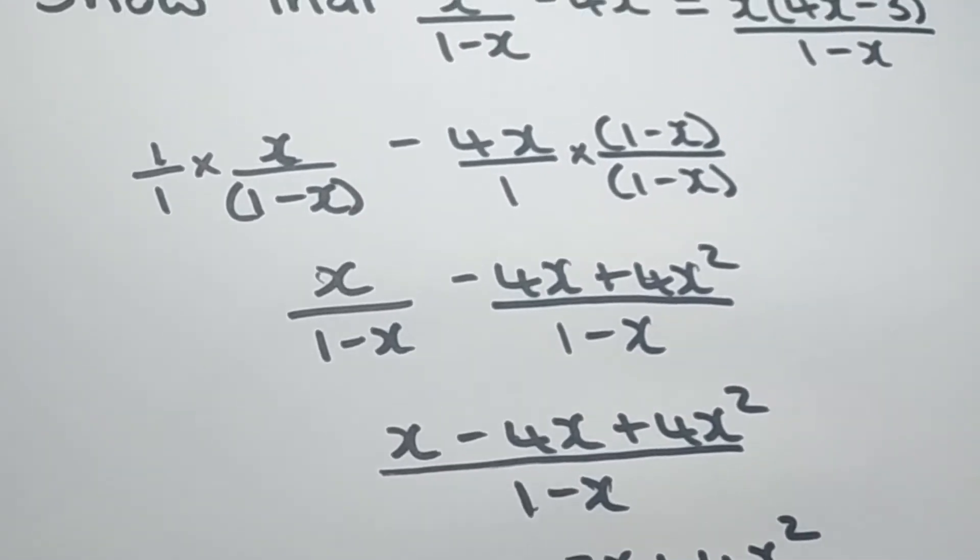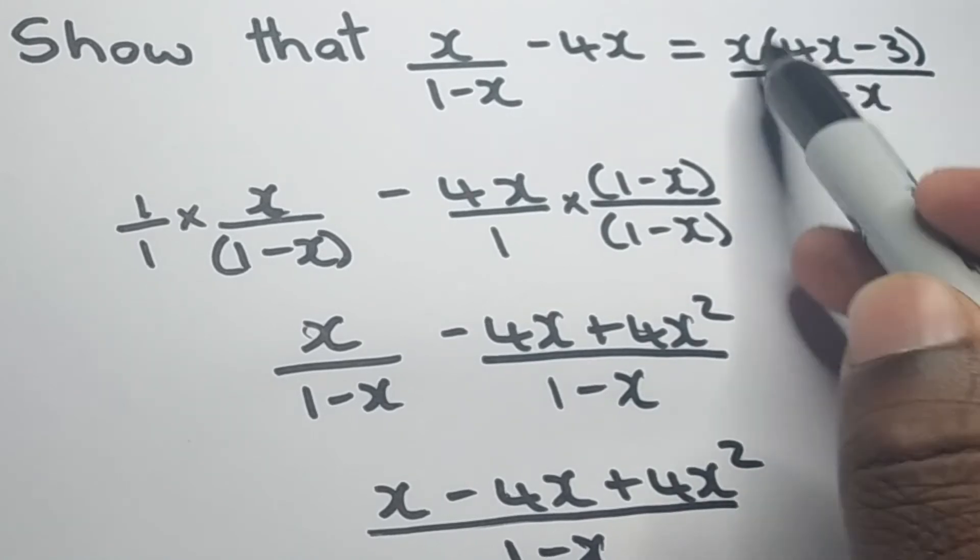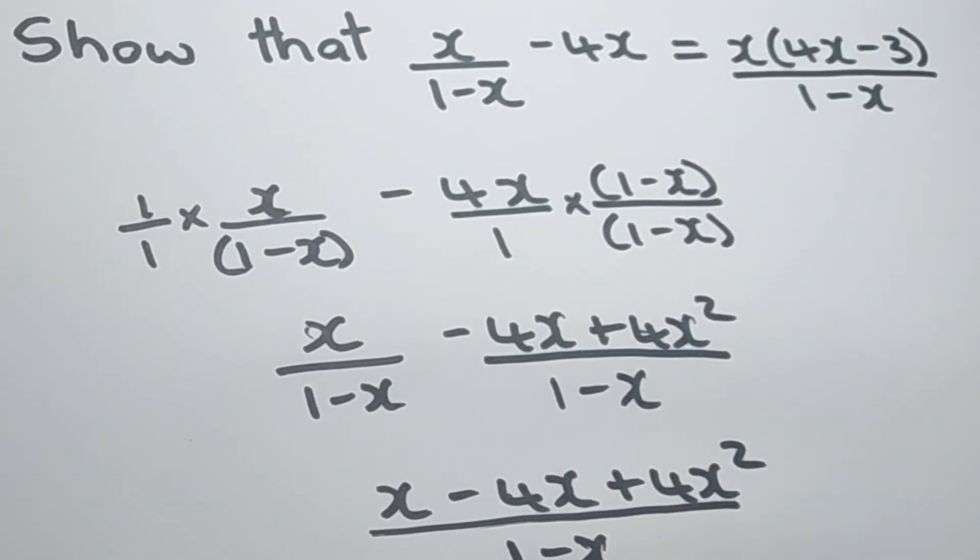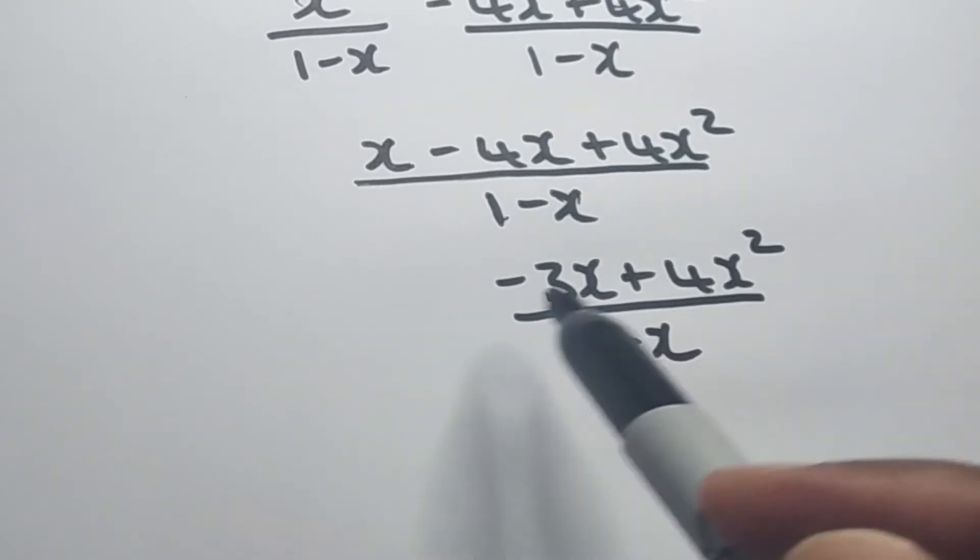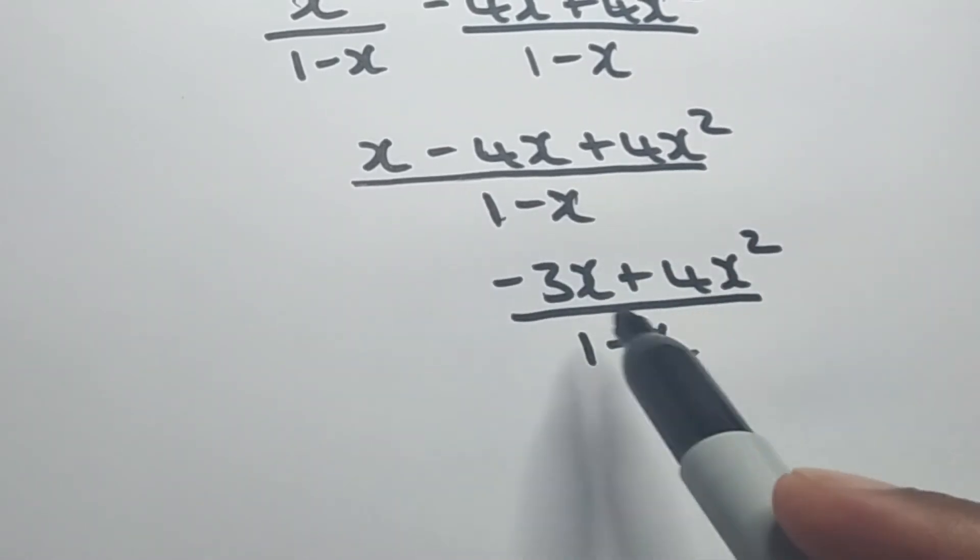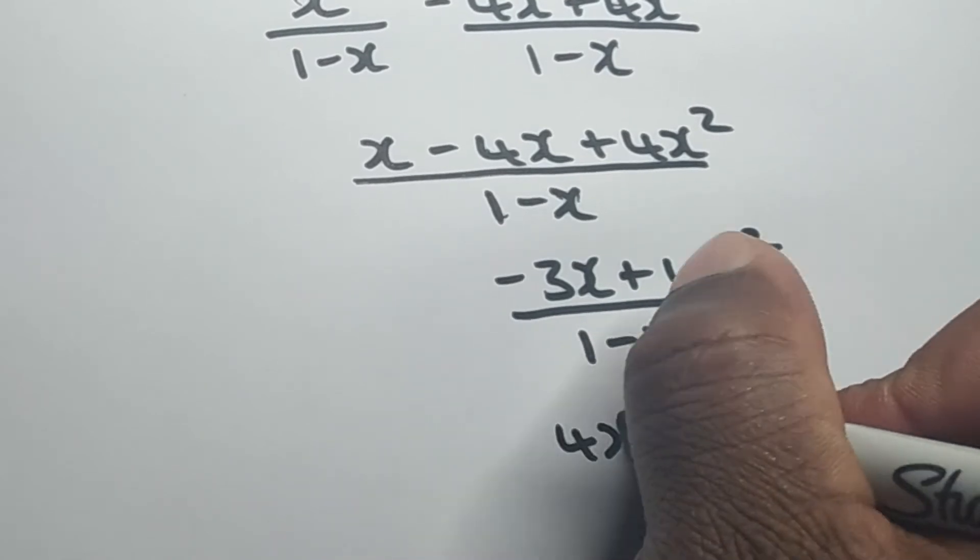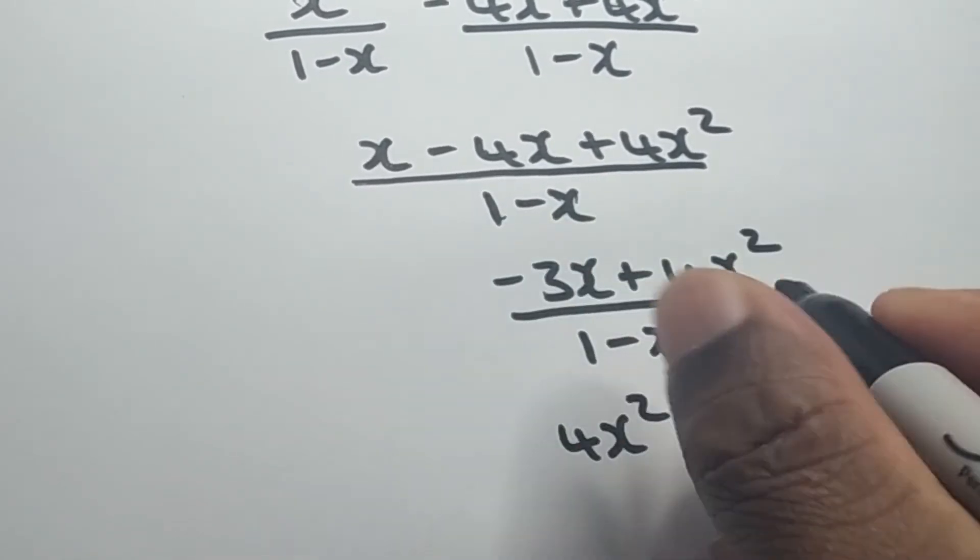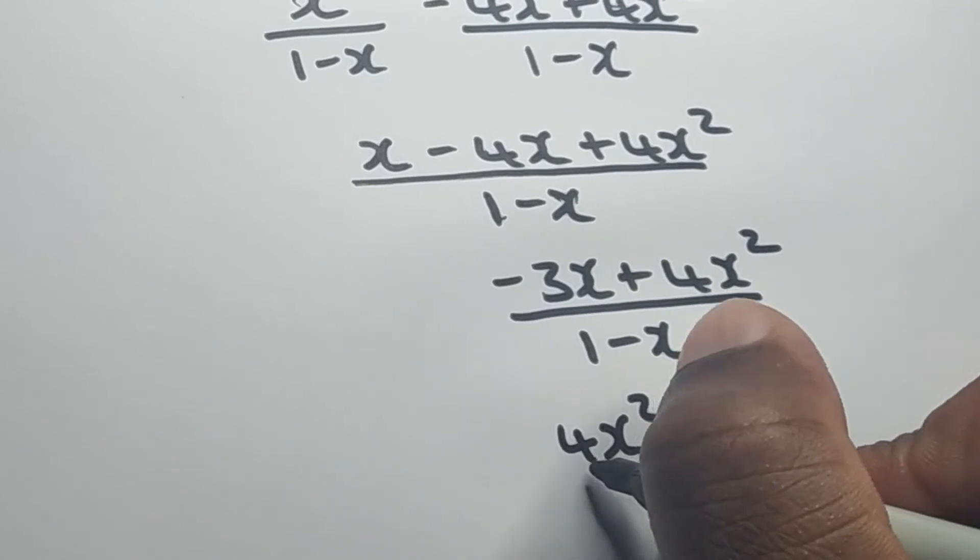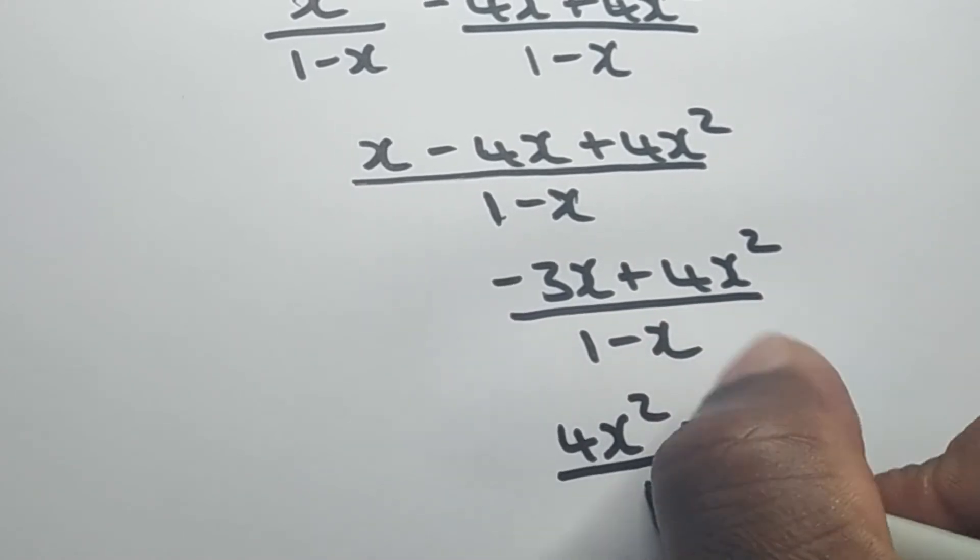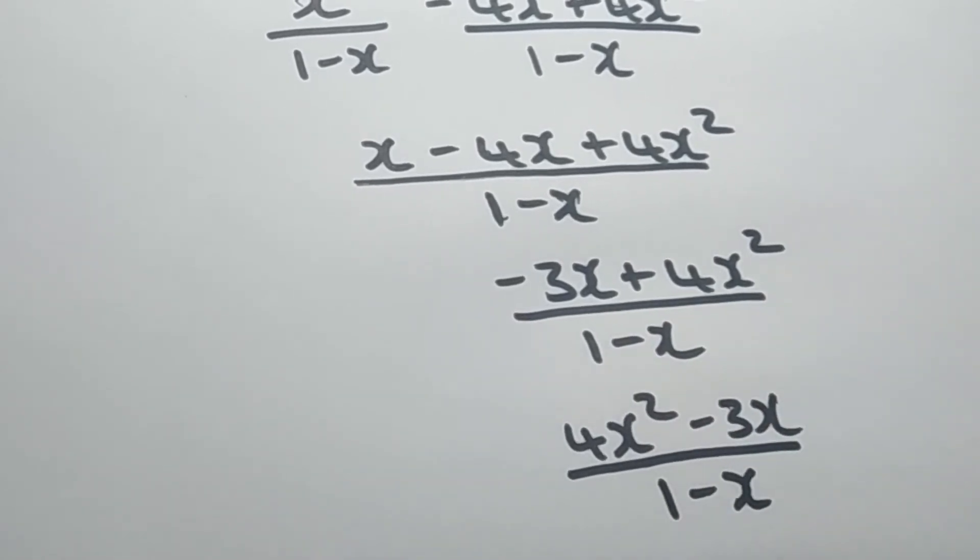And what I'm going to do, being that we want it to look like this over here, I'm going to rearrange this thing. So I'm going to rearrange the terms that I have in the numerator. So I'm going to put the 4x² at the front, put the minus 3x after. And we'll put this over the 1-x just the same.